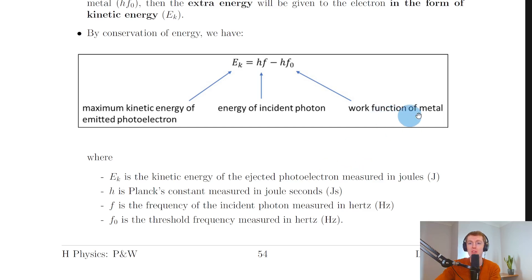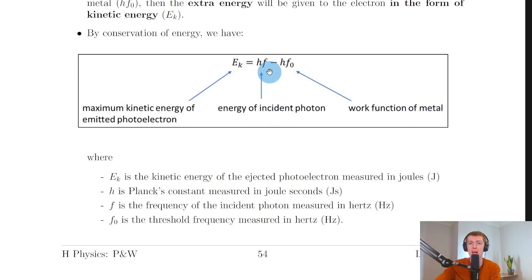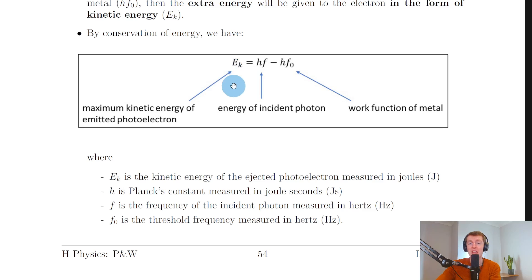For example, in a question you might be given the work function of a metal and the frequency of the incident radiation. In that case you could use Planck's constant from the data sheet, multiply it by the frequency you're given, and subtract the work function given in the question in order to calculate the maximum kinetic energy of the emitted photoelectrons.